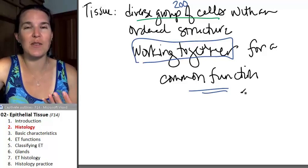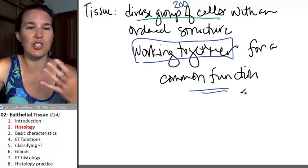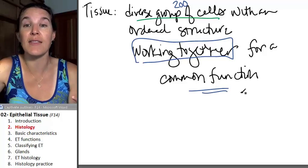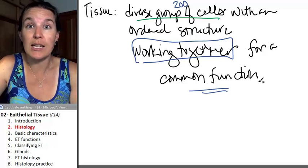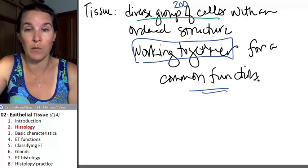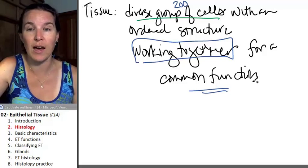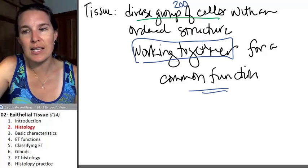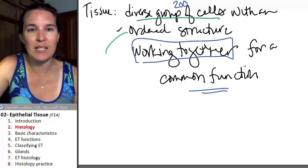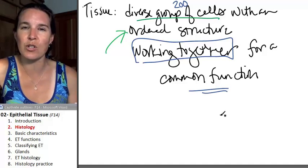If you think about the immune system, you have just a jillion different kinds of cells and they are working together to keep invaders out of your body. The other thing that's necessary in a tissue is that it has to have an ordered structure.